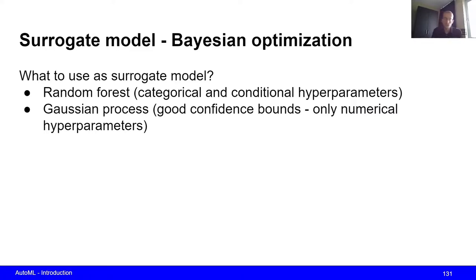Now, of course, the question that we still have to ask ourselves is, well, what kind of model can we actually use as a surrogate model? Now, one popular approach or popular technique is a random forest. And why is this popular? Well, because it can deal both with categorical hyperparameters. So these are hyperparameters that take on discrete values. For example, a boolean flag, whether we want to use batch normalization in a neural network.